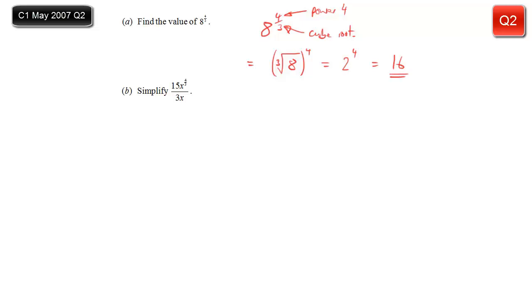Part B. Let's look at this one. 15x to the power of 4 thirds divided by 3x. We need to simplify that. Now we look at the numbers and the letters separately. Obviously on top we've got 15 and the bottom we've got a 3. These can cancel by a factor of 3 to give me 5 over 1. So I'll just write that as 5.